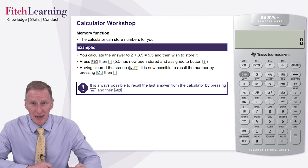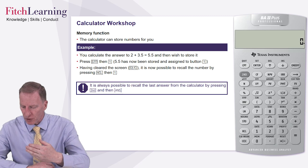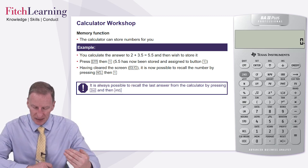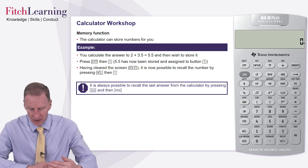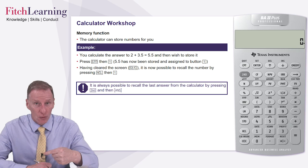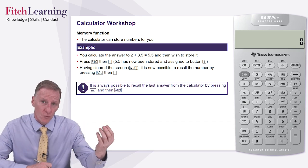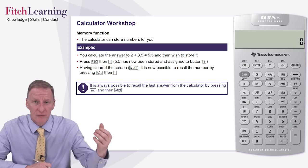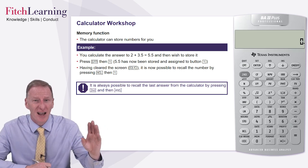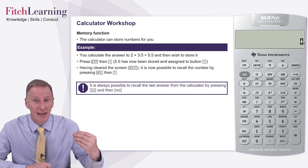That's the memory function. And you'll also see a little note there at the bottom of the slide which says it's possible to recall the last answer from the calculator by pressing second and then answer. And notice that the answer is effectively the equals button. So by doing second equals, you can recall the answer to the previous calculation that you've undertaken. Sometimes that's useful. I have to say it's not something that perhaps you'll use too frequently in the exam, but it's handy to know that it's there.